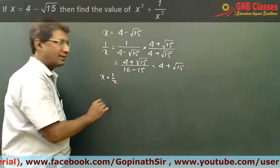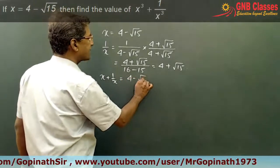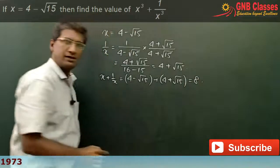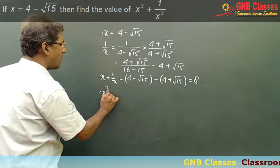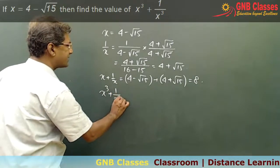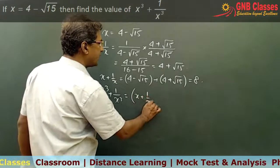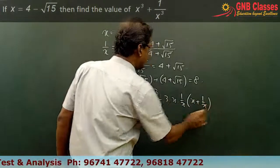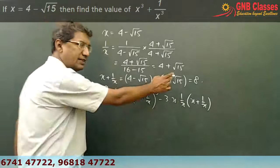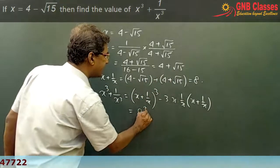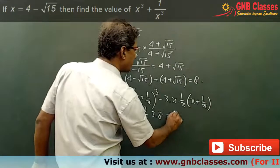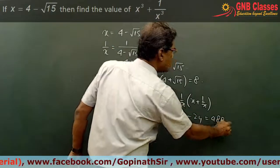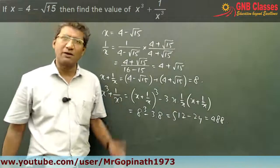Therefore, x + 1/x = (4 − √15) + (4 + √15) = 8. We need to find x³ + 1/x³. Using the formula a³ + b³ = (a + b)³ − 3ab(a + b), and substituting x + 1/x = 8, we get 8³ − 3 × 8 = 512 − 24 = 488. So the value of x³ + 1/x³ is 488.